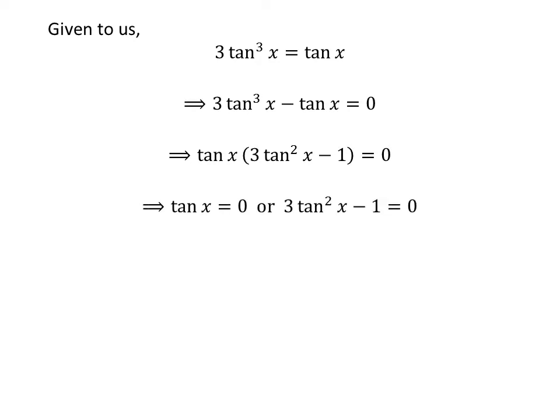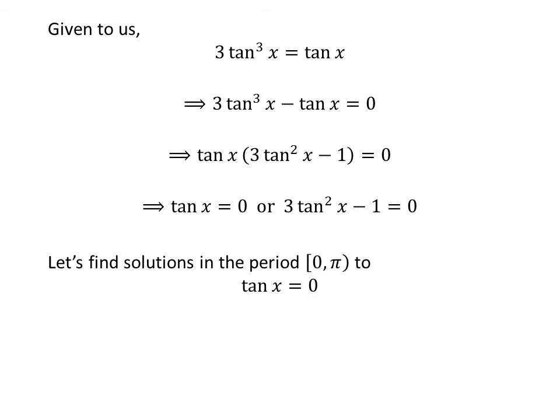The above expression gives either tangent of x is equal to 0, or 3 times square of tangent of x minus 1 is equal to 0. Let us first find the solutions to the equation tangent of x is equal to 0 in the period 0 to pi, as tangent is a periodic function with period pi. We know the value of tangent of 0 is 0.